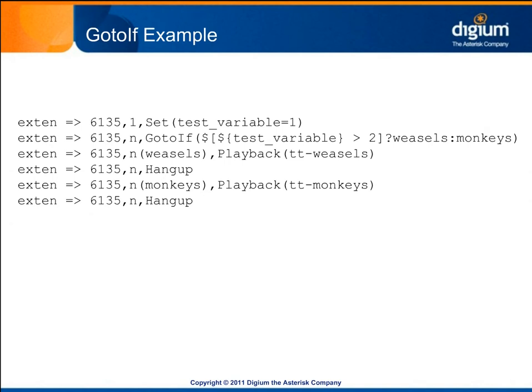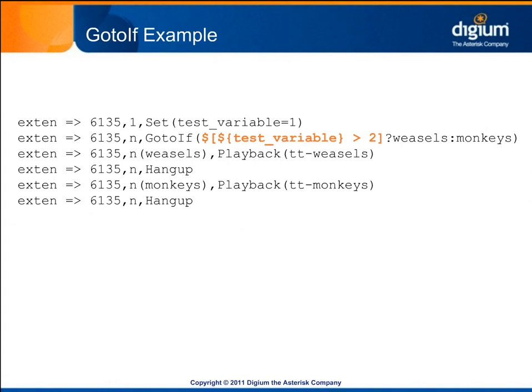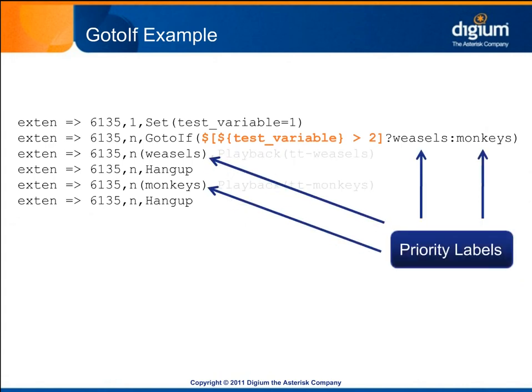A simple example using priority labels would look like this. The first priority in the extension sets the channel variable called test variable to one. The GoToIf application in the next priority contains an expression to evaluate, and specifies the destination to route to based on whether the expression is true or false. We know that a single argument to a destination must be a priority in the current context and the current extension. We also know that because the priority is a string or a word instead of a number, that it is a priority label. Remember that priority labels are arbitrary, and we could name them almost anything we want.